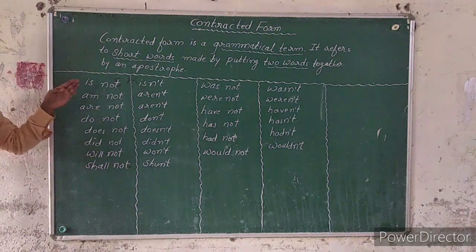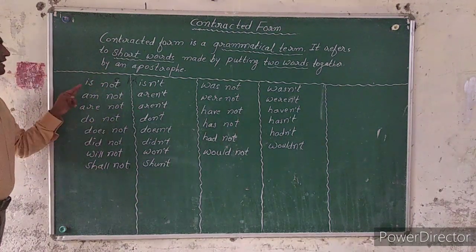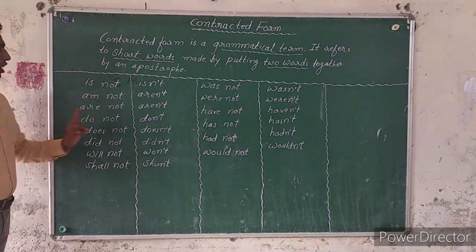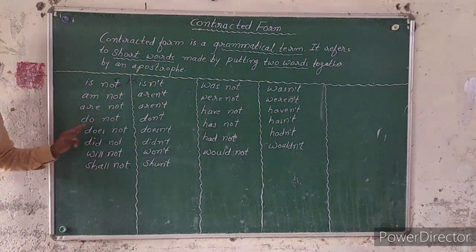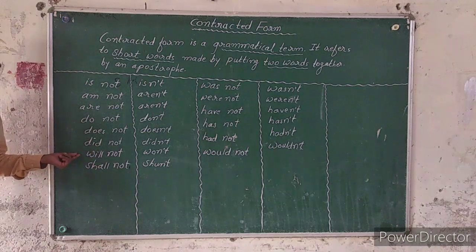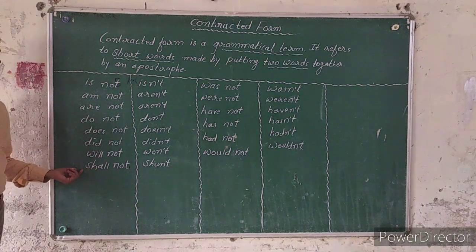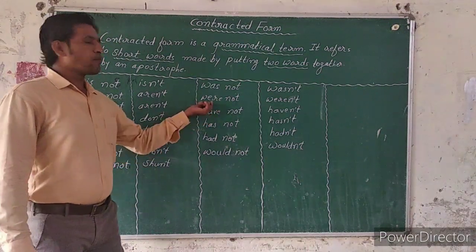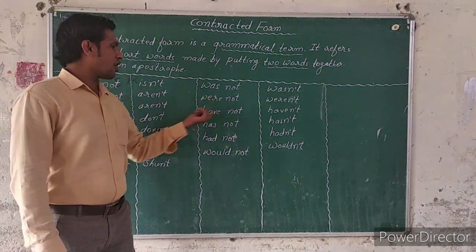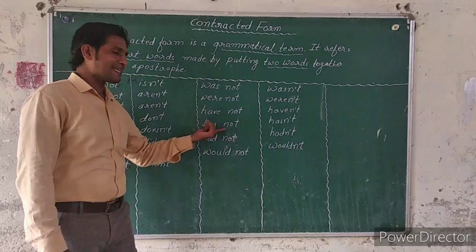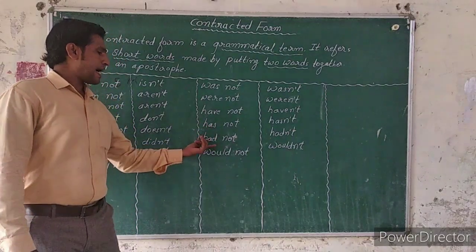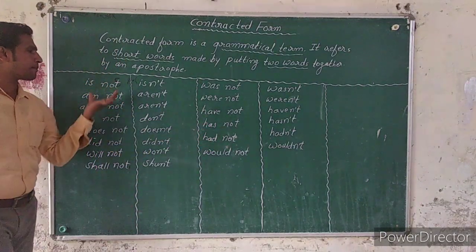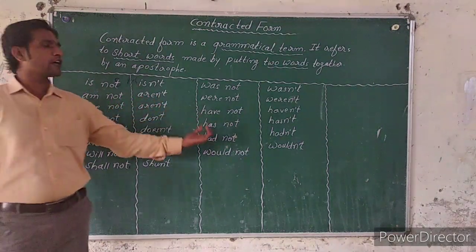For example: was not, were not, had not, has not, could not. We put these two words together — the verb or auxiliary and 'not' — in the contracted form.